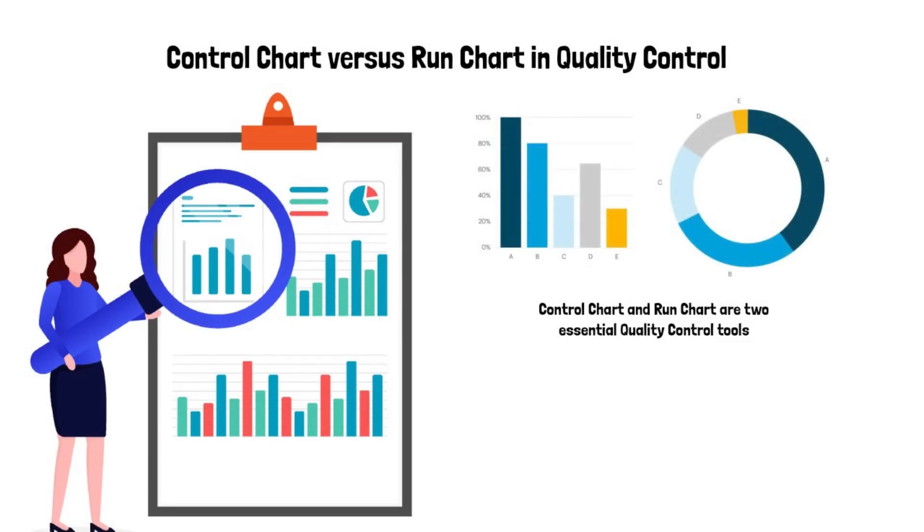There are seven tools for quality control: check sheet, control chart, fishbone diagram (cause and effect diagram), flow chart, histogram, Pareto chart, and scatter diagram.